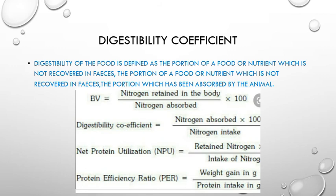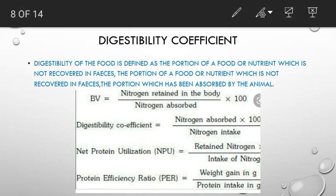Digestibility coefficient: digestibility of food is defined as the portion of food or nutrient which is not recovered in feces — i.e., the portion which has been absorbed by the animal. Digestibility coefficient is calculated as nitrogen absorbed divided by nitrogen intake, multiplied by 100.